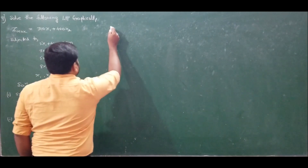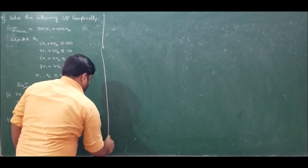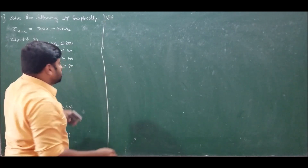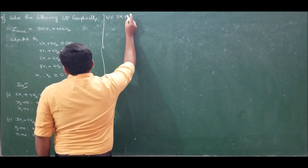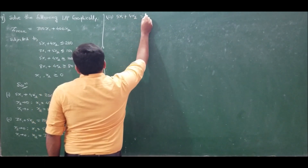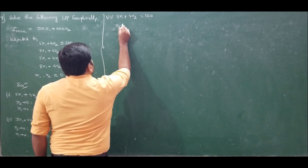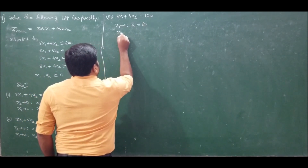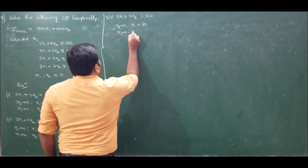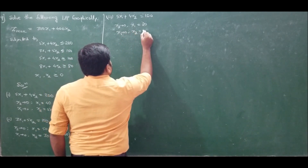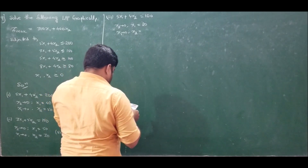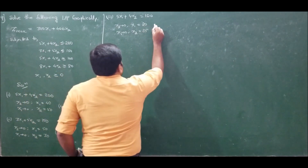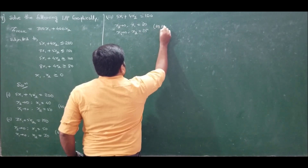Now moving to the third constraint: 5x1 plus 4x2 equals 100. Setting x2 to 0, the value of x1 is 20. Setting x1 to 0, x2 equals 100 divided by 4, that is 25. So the coordinates of constraint 3 are (20, 25).